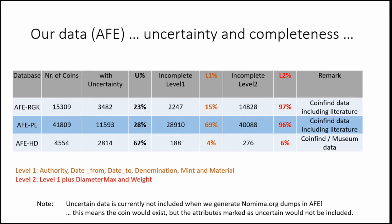Another aspect that causes problems with data quality is incompleteness of data — when a field is not filled, is that relevant or not? Our Coinfind database has three instances in Frankfurt, Warsaw, and Heidelberg. Carsten looked through the entries to see how complete they are. In Frankfurt, 23% of entries have uncertainty flagged somewhere in the data; in Heidelberg it rises to 62%. This is partly based on where the material comes from — literature doesn't flag much uncertainty, whereas Heidelberg deals with actual corroded coin finds with a lot of uncertainty.